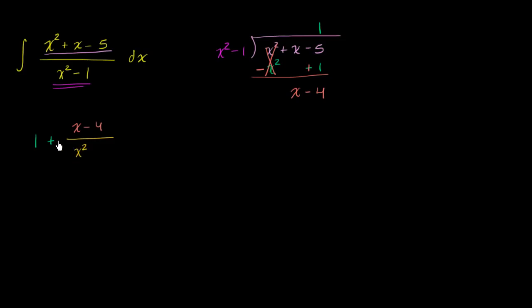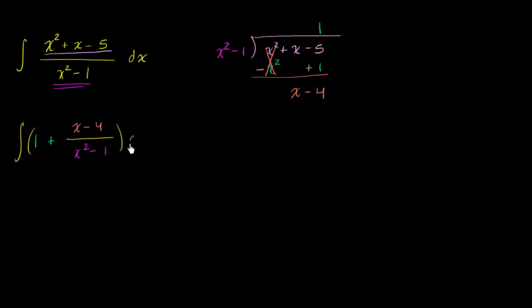So we can rewrite the expression we're trying to find the antiderivative of as one plus x minus four over x squared minus one. Now we have a lower degree in the numerator than in the denominator. Taking the antiderivative of the "one" part is straightforward, but for the rational part it's not clear — the derivative of x squared minus one is two x, which isn't x minus four, so u substitution won't help. We need another tool: partial fraction expansion.